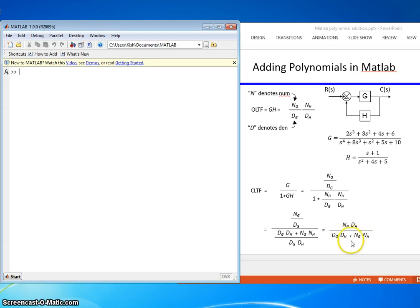So, let's try to do this and see what happens. Ng equals 2, 3, 4, 6. So, we'll just build these guys. Dg equals 1, 8, 1, 5, 10.